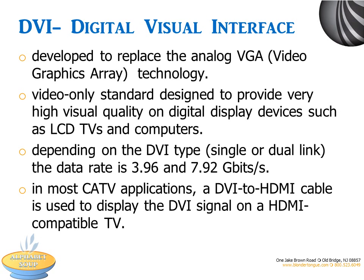DVI, or Digital Visual Interface, is the precursor to HDMI and was actually developed to replace the analog VGA, or Video Graphics Array, technology. This video-only standard was designed for very high visual quality on digital display devices such as LCD TVs and computers. The two types of DVI, single or dual-link, have data rates of 3.96 or 7.92 gigabits per second respectively. In most CATV applications, a DVI to HDMI cable is used to display the DVI signal on an HDMI-compatible TV.